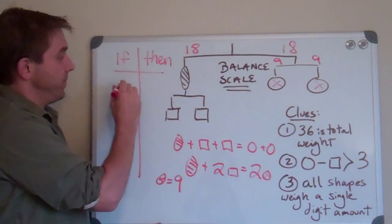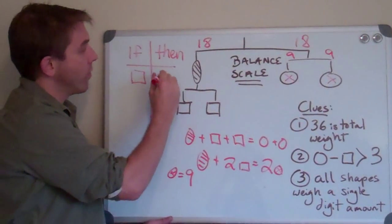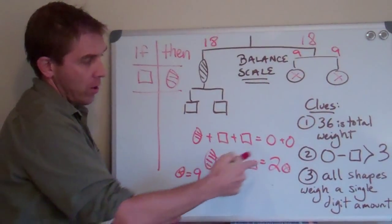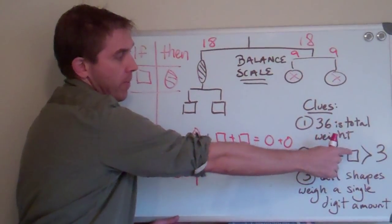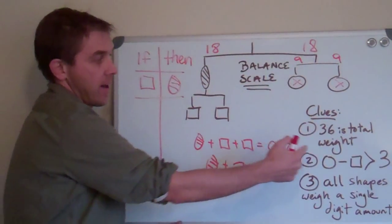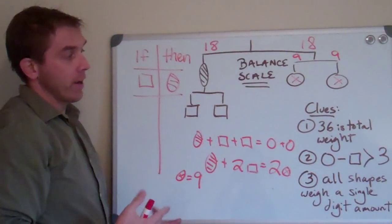If the square is equal to something, the oval has to be a certain amount, right? So, based on this clue, circle minus the square is greater than three. If the circle is nine, then nine minus the square is greater than three. Well, let's start with four.